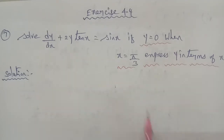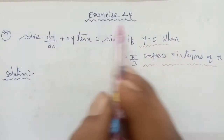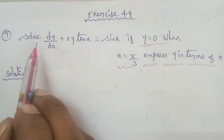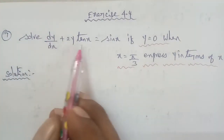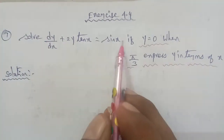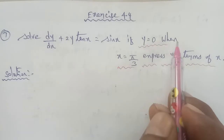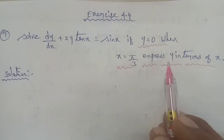Hi students, I am Gopinath. Exercise 4.4, question number 7: solve dy by dx plus 2y tan x equal to sin x, if y is equal to 0 when x is equal to π/3.